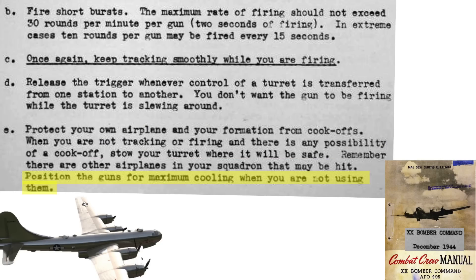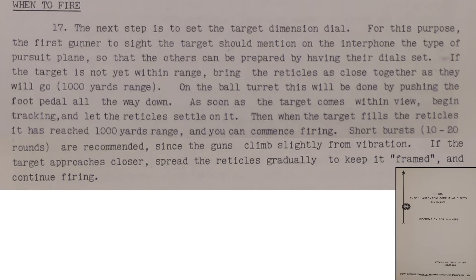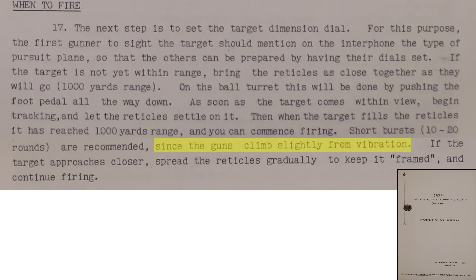Point the turret guns for maximum cooling when not in use. The bullet dispersion of the two-gun B-29 turret is a low 2.5 mils, as defined in a 1945 20th Bomber Command document titled Combat Performance of the Remote-Controlled Turrets of the B-29 Aircraft. This compares to an 8 mil dispersion for 100% of a fighter's single machine gun bullet strikes. A 1942 Sperry Gun Sight Manual recommends B-17 ball turret machine guns be fired between 10 and 20 rounds per burst to reduce barrel rise, gun vibrations, and barrel overheating.